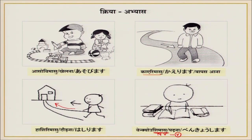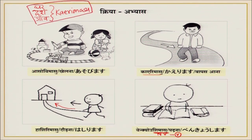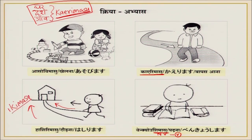Now let me tell you one important thing. When you always go back to your own home, your own country, your own village — that is kaerimasu. We always return to our own place. But we are not always going back somewhere else — that is ikimasu. This is the small difference between ikimasu and kaerimasu.